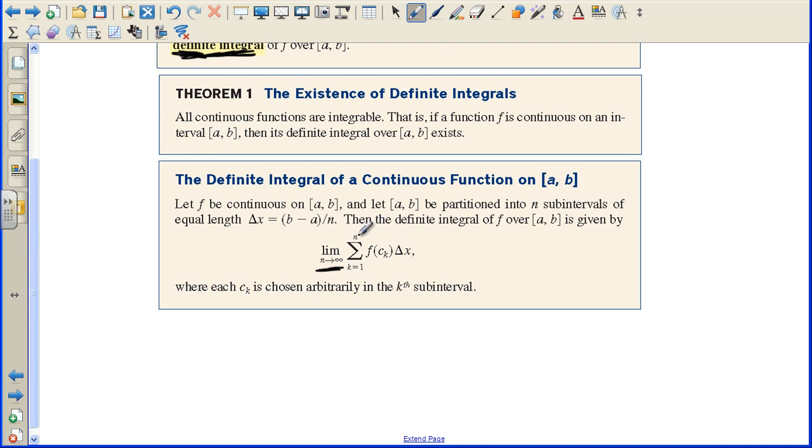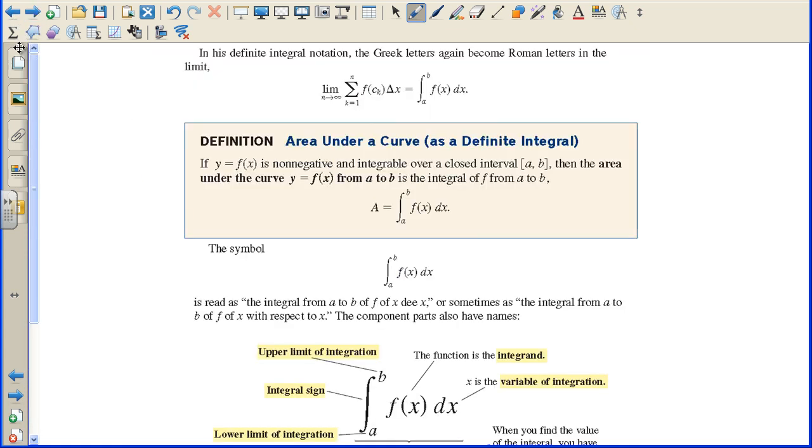The definite integral of a continuous function on A to B is the limit as N approaches infinity, so the number of rectangles. Let F be continuous on A to B and let A to B be partitioned into N subintervals of equal length. Then the definite integral of F over A to B is given by the limit as N approaches infinity. In other words, the number of rectangles is approaching infinity, and then we have the base times the function value, or the height. This is still base times height of the rectangles, where each C sub K is chosen arbitrarily in the K subinterval.